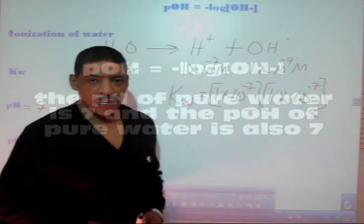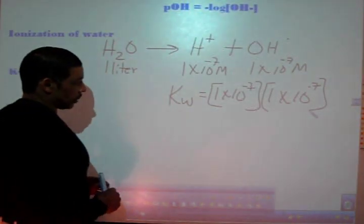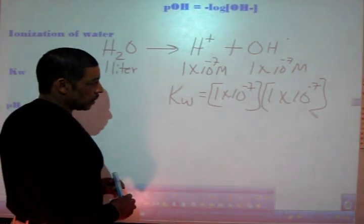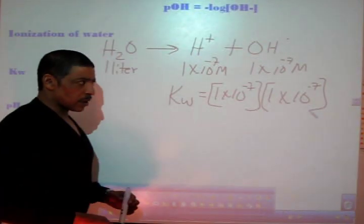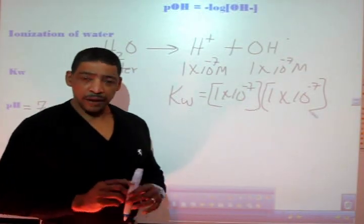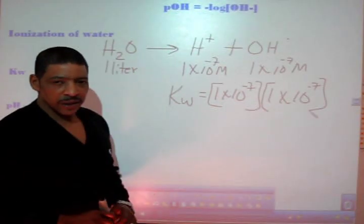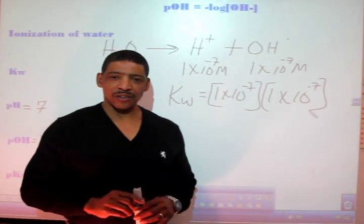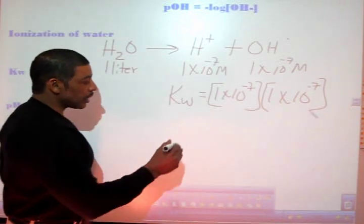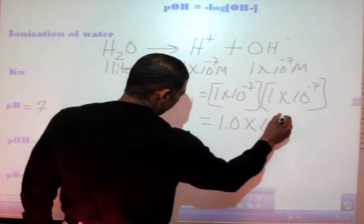The ionization constant for water is determined as follows. In 1 liter of water we will have 1×10⁻⁷ molar hydrogen ion and 1×10⁻⁷ molar hydroxide ion. These concentrations are constant, so if we multiply them we generate another constant, known as the ionization constant of water, or Kw. The Kw of water is always going to be 1.0×10⁻¹⁴.